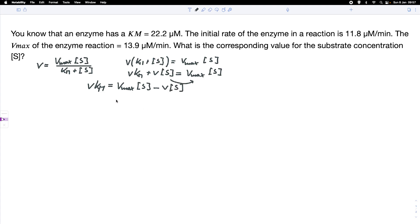And we factor S out of this term here. So we've got VKM equals Vmax minus V multiplied by the substrate concentration. And now we just simply divide both sides of the equation by this term here.